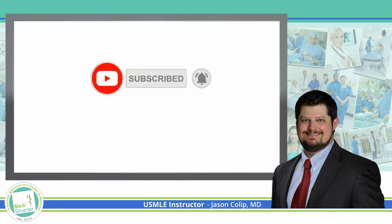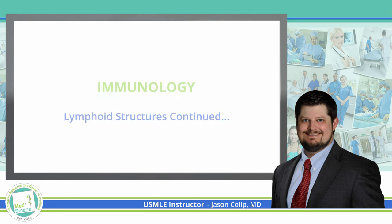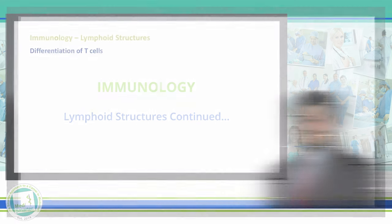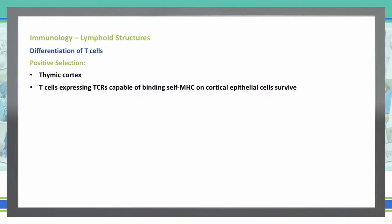Let's continue on in our discussion of T cells and talk about the differentiation of T cells. T cells undergo two different types of selection: positive selection and negative selection. Positive selection occurs in the thymic cortex, and what we're seeing here is T cells that express the TCRs that are capable of binding the self-MHCs on cortical epithelial cells will survive.